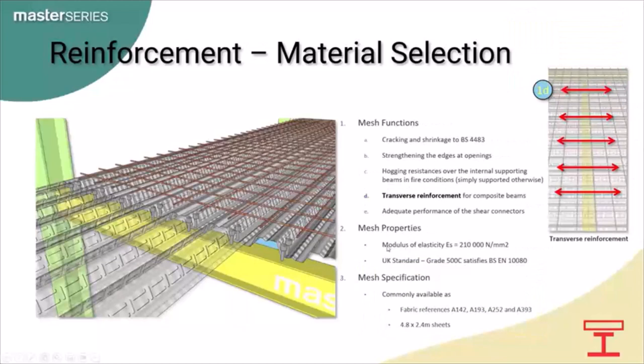Reinforcement is usually in the form of mesh. Its functions include reducing crack control at the supports — which occurs because of flexural tension and differential shrinkage effects — strengthening the edges of openings, and providing bending resistance at the supports of the slab in the fire condition when the concrete zone goes under tension, i.e. hogging over the beam. Transverse reinforcement runs perpendicular to the beam and is required in the concrete flange of composite beams to resist splitting forces. The reinforcement also helps distribute the effects of localised point and line loads.